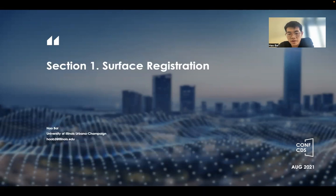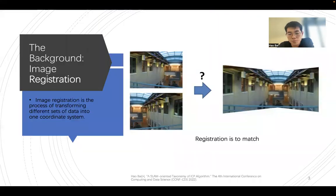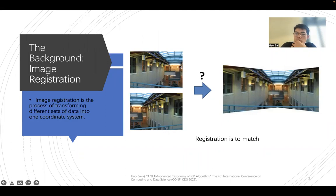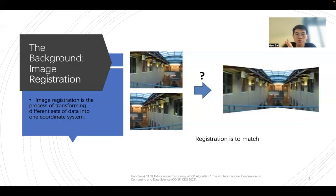The ICP algorithm is a base solution for surface registration. To talk about surface registration, we first need to know about image registration. Consider this scenario: you have a camera with no panorama functionality, but you still want to take a panorama. So you use your camera to take two photos and combine them. This is equivalent to having two photos in different coordinate systems for the same scene, and you want to combine them into one coordinate system. This is called image registration.